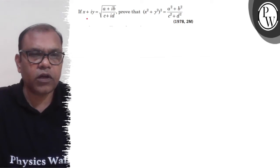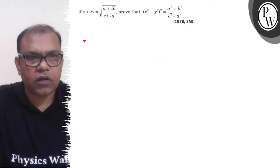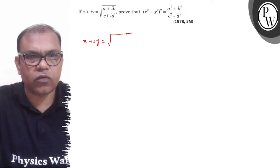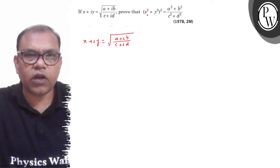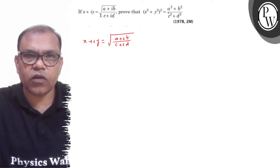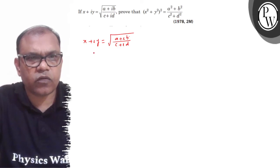Hello, let's see the question. The question says: x plus iota y equals under root of a plus iota b upon c plus iota d. Aur aapko proof karna hai, x square plus y square whole square, this is equals to a square plus b square upon c square plus d square.